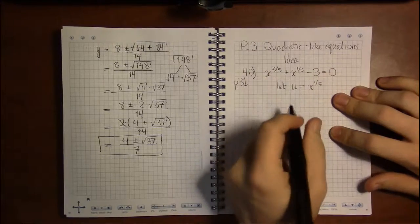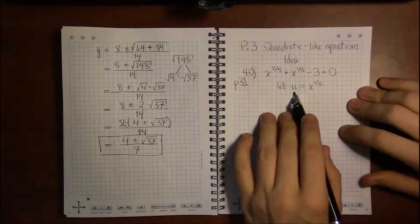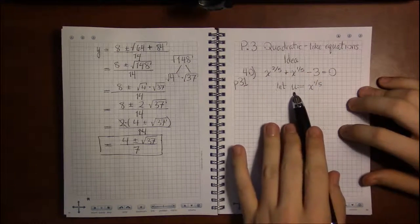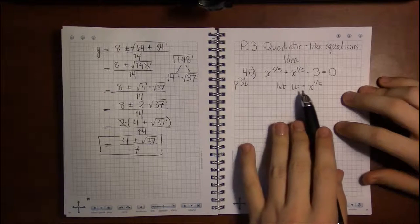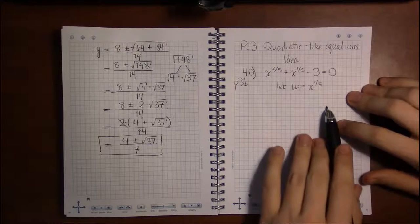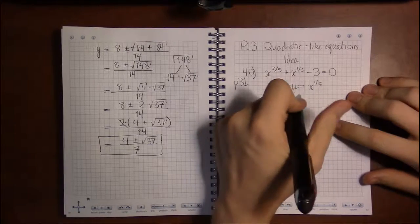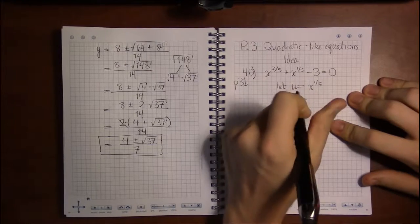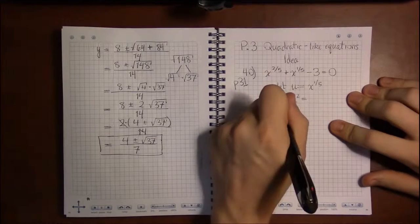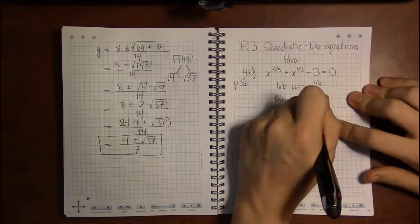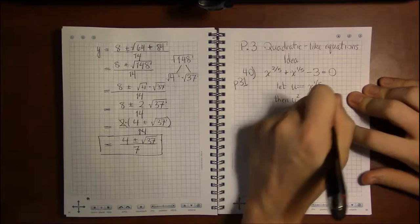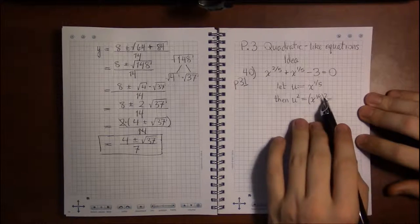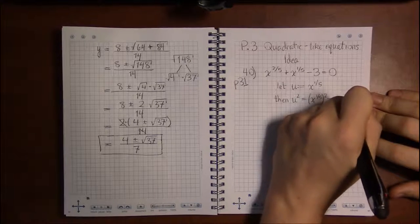What's difficult about quadratic-like equations is trying to find out what to substitute for. So we're going to pull u out of thin air. We're going to say let u be defined as x to the one-fifth. Well, to be quadratic, we can only deal with u and u squared and numbers. So if u is x to the one-fifth, then u squared is x to the one-fifth squared. And if you remember your rules of exponents, this means we multiply one-fifth times two, and two one-fifths give me two-fifths.